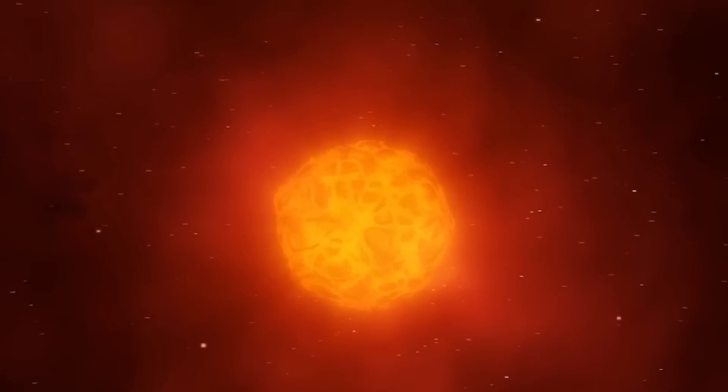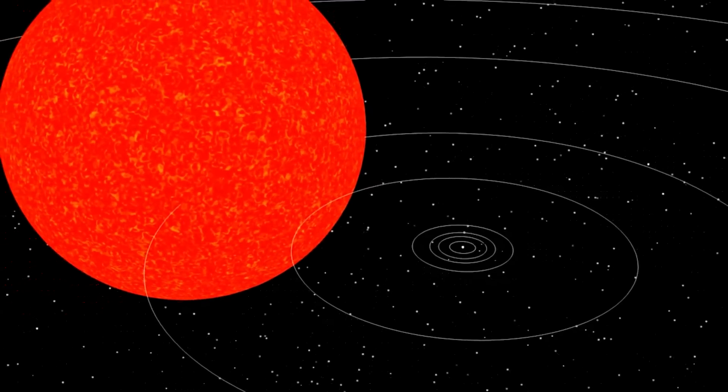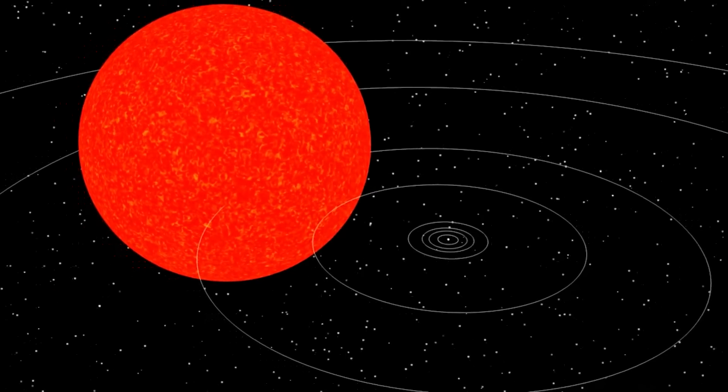If Betelgeuse were to be placed exactly where the Sun is in our solar system, it would reach up to Jupiter and completely absorb Mercury, Venus, Earth, and Mars.